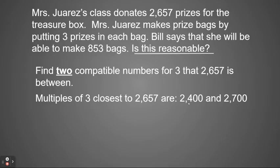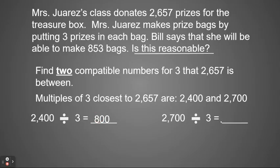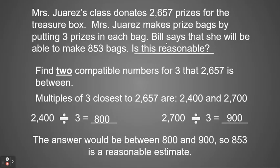So now I'm going to be dividing both of those numbers by three. So 2,400 divided by three is 800. And 2,700 divided by three is 900. So now my answer has a range. It would fall anywhere above 800 and below 900. So going back to my question, it says Bill said they can make 853. So since the answer is between 800 and 900, 853 is a reasonable estimate. Again, I don't know if it's correct or not, but it is reasonable.